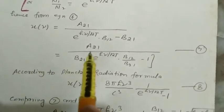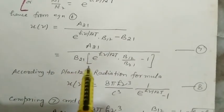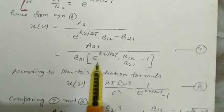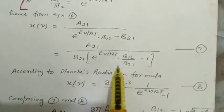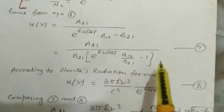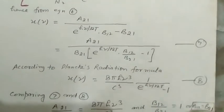U(ν) = A21/[B21·(e^(hν/kT)·B12/B21 - 1)]. This is equation number 7.